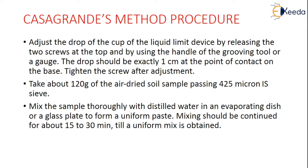We have to take 120 grams of the air-dried soil sample passing through the 425 micron IS sieve. Mix the sample very thoroughly with distilled water in an evaporating dish or on a glass plate to form a uniform paste, continuing for about 15 to 30 minutes until a very uniform mix is obtained.